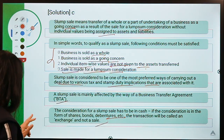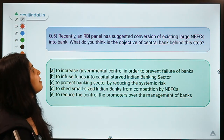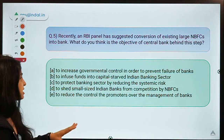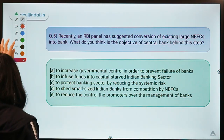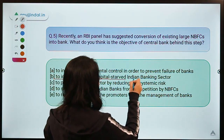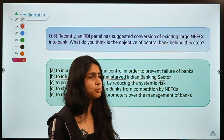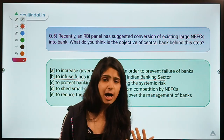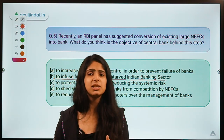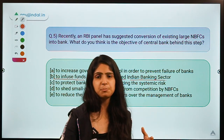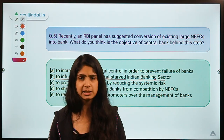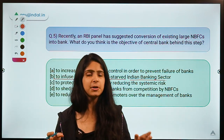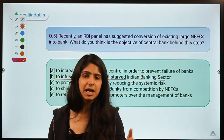Question number five: Recently an RBI panel has suggested conversion of existing large NBFCs into banks. What is the objective of the central bank behind this step? The correct option is option B: to infuse funds into the capital-starved Indian banking sector. Recently, one deputy governor of RBI gave a statement that large NBFCs should be converted into banks, and large conglomerates should be allowed entry into the Indian banking sector. RBI has come up with a working paper with these recommendations, open for feedback, which could potentially open up the banking sector for NBFCs and large conglomerates like Tata or Adani.